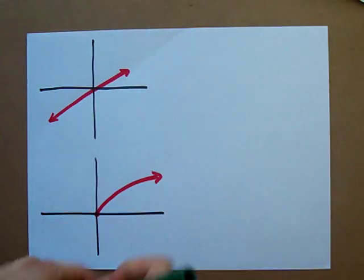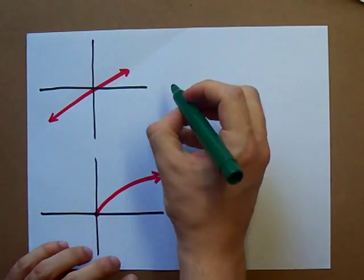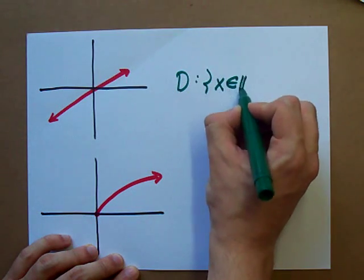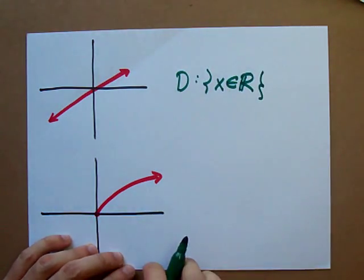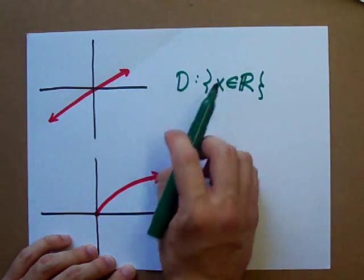There's nothing that X can't be here and so the domain of this function is any real number that you want. You need arrows on either side for this to be your domain. And then a slightly trickier one.